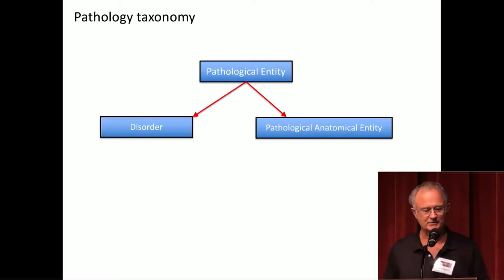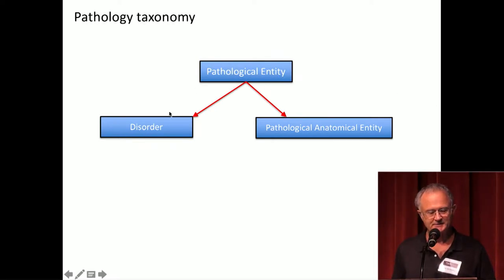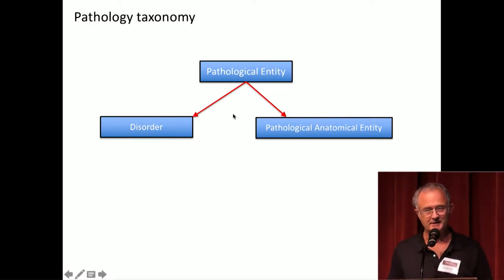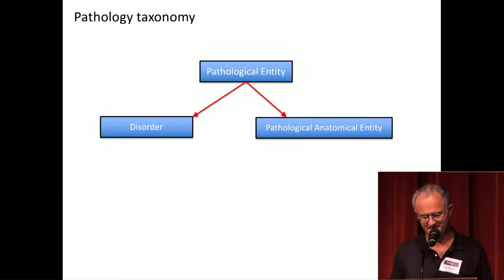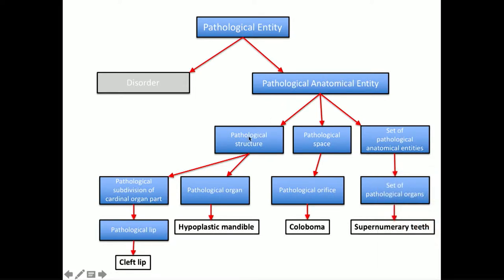This framework is a classification hierarchy — a taxonomy. At the top level we have a pathological entity with two branches. One branch covers disorders like diseases and malformations. Those diseases usually involve pathological anatomical entities, which are transformations of normal anatomical entities. Pathological structures might include things like a hypoplastic mandible or cleft lip, or spaces or sets of pathological anatomical entities.